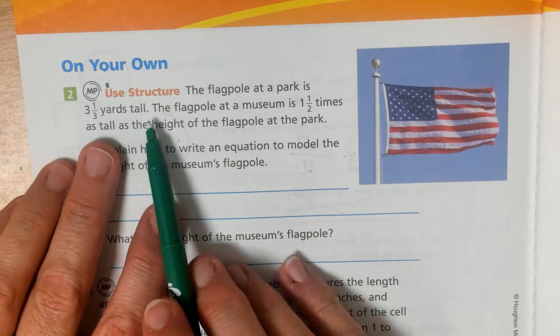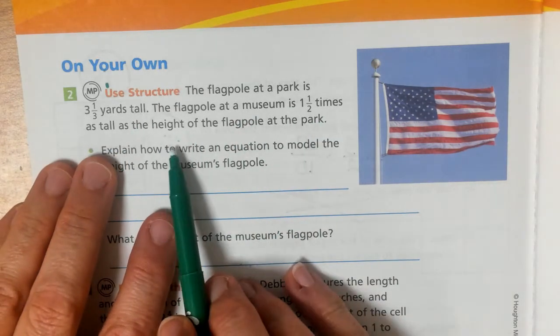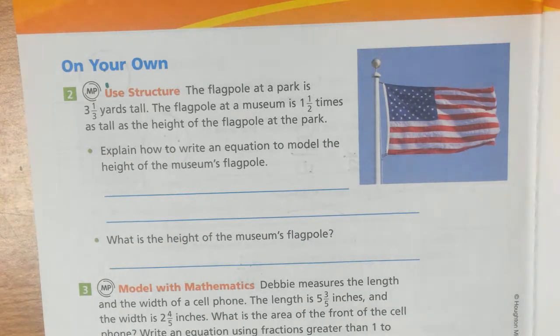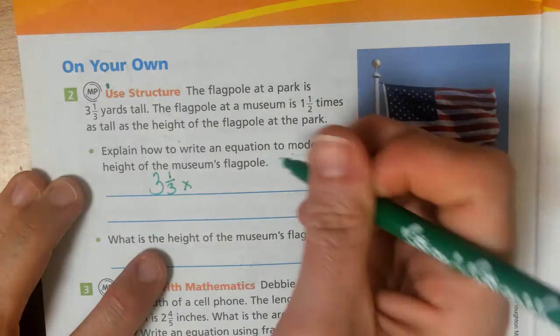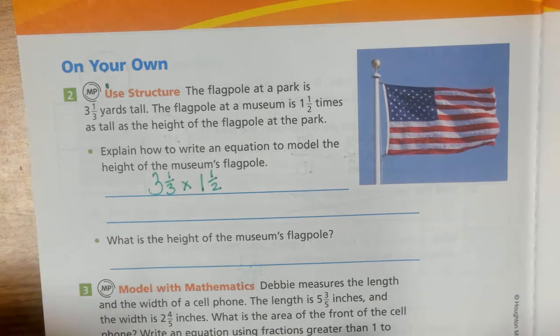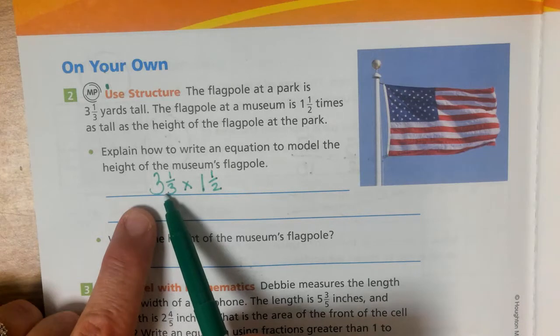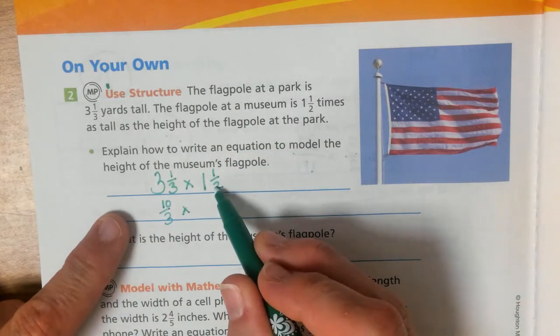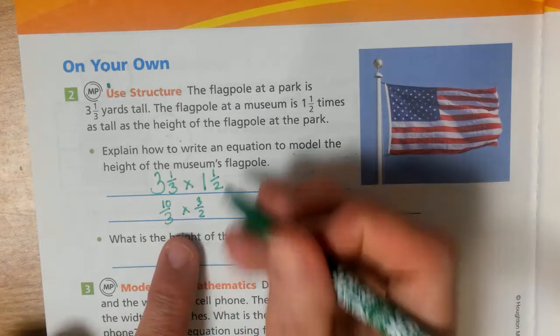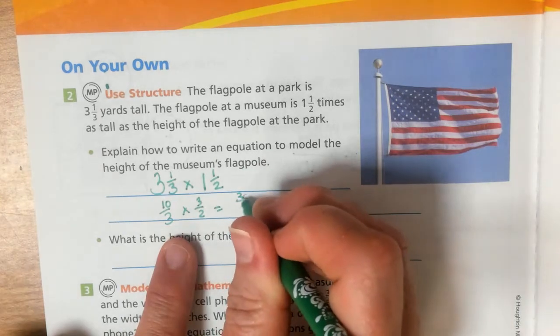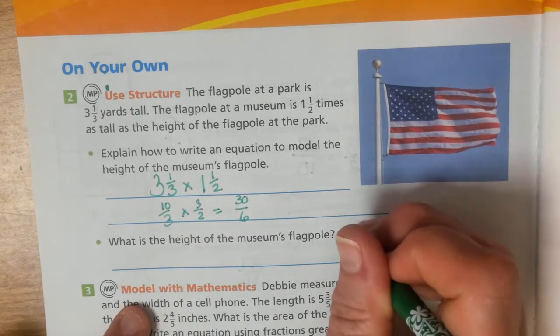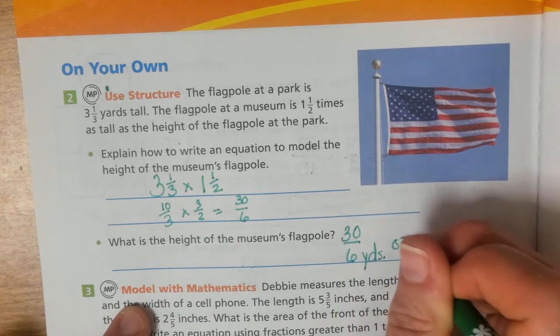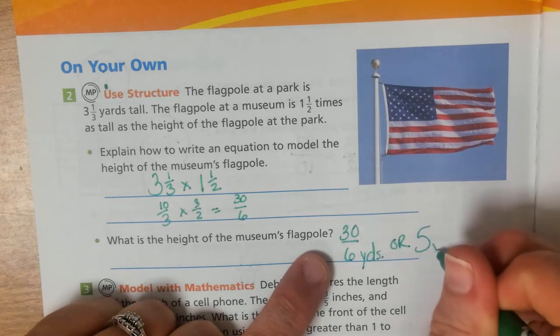All right. On your own. Pause the video. You can do it independently. Of course, stay right with me. The flagpole at a park is 3 and 1 half yards tall. The flagpole at a museum is 1 and 1 half times as tall as the height of the flagpole at the park. So, we're going to write an equation. So, we would have 3 and 1 third times 1 and 1 half. Right? So, I'm going to rename these numbers. I'm going to rename this to an improper fraction. So, 3 times 3 is 9. Plus 1 is 10 thirds. 1 times 2 is 2. Plus 1 is 3 halves. 10 thirds times 3 halves. 10 times 3 is 30. 3 times 2 is 6. So, the height of the museum's flagpole is 30 sixths yards. Or, 30 divided by 6 would be 5 yards.